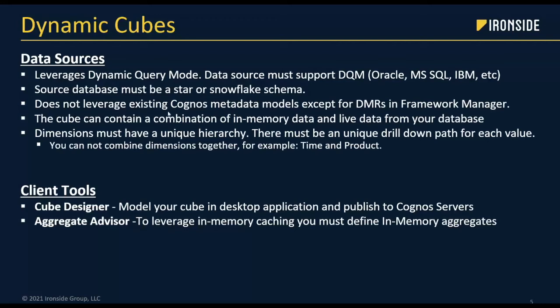One key thing: Dynamic Cubes do not leverage existing Cognos metadata. If you have a Framework Manager model, it does not use that. It does allow you to pull in a DMR if you've built one in Framework, but most people haven't used that in quite some time. So for most people, you're not able to leverage your existing metadata — you have to recreate all those joins and metadata in Dynamic Cubes itself.